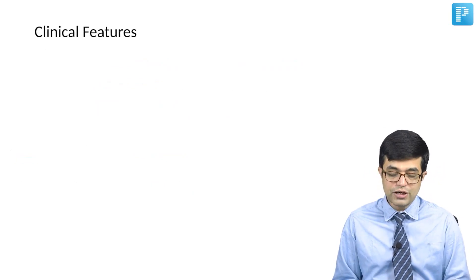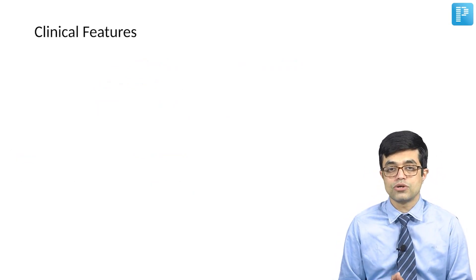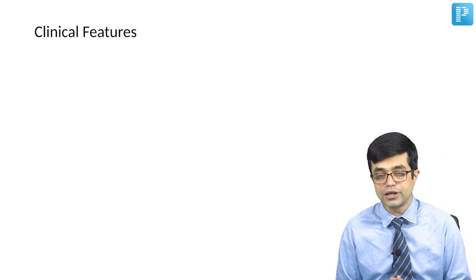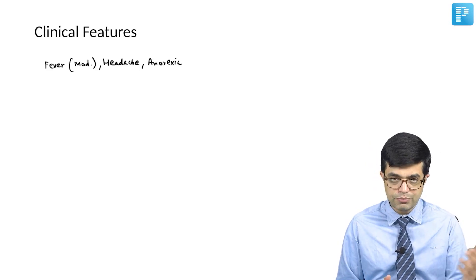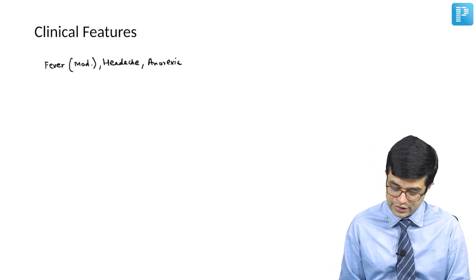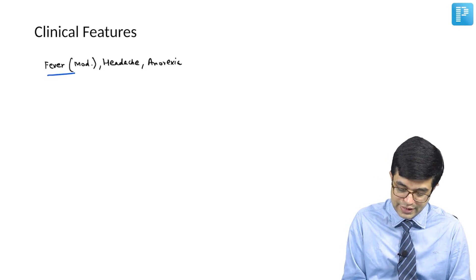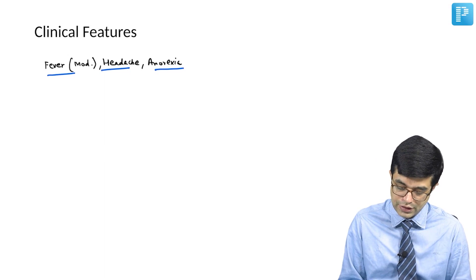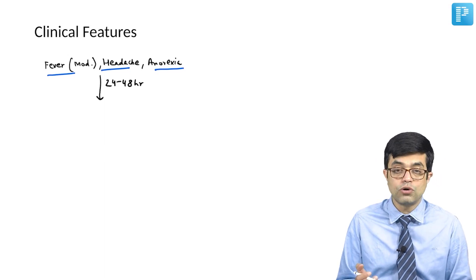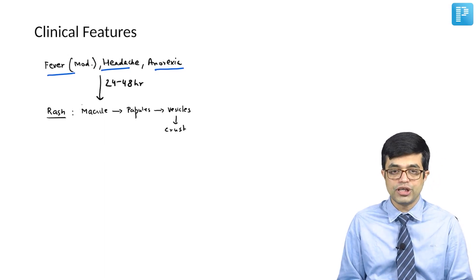Coming to the clinical features of varicella zoster virus — how chickenpox presents. After an incubation period of 10 to 21 days, there is initially moderate-grade fever, headache, and anorexia, which are called prodromal symptoms. Then, 24 to 48 hours later, there is onset of rash.